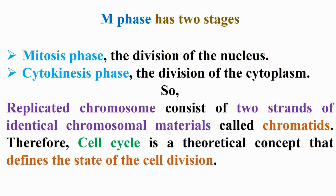The meiotic phase has two stages. Stage 1 is the mitosis phase, which is the division of the nucleus. Otherwise, stage 2 is the cytokinesis phase, which is the division of the cytoplasm.